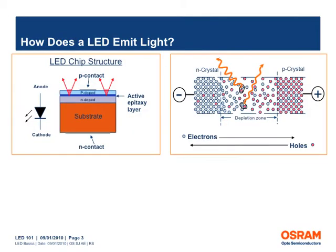LEDs are semiconductor diodes, or electronic devices that permit current to flow in only one direction. The diode is formed by bringing two slightly different materials together to form a PN junction. In a PN junction, the N side contains negative charge carriers, i.e. electrons, and the P side contains positive charge carriers, or holes, which indicate the absence of electrons.